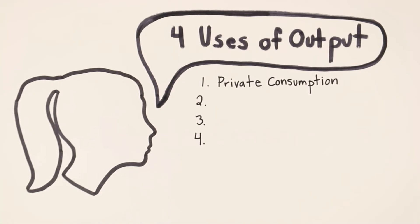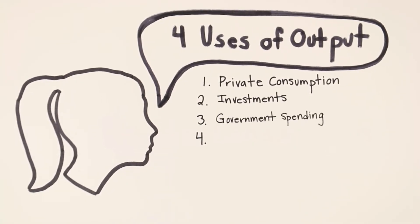One, private consumption; two, investments; three, government spending; and four, net exports. Now let's look at each of these in detail.